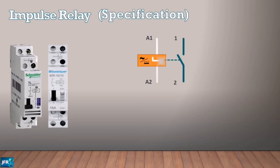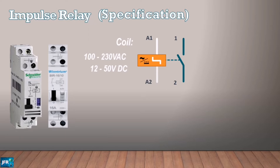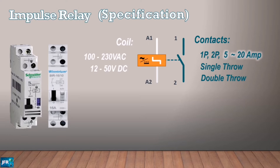For specifications, relay coils can be from 100 to 230 volts alternating current, or 12 to 50 volts direct current power source. Relay contacts can be a single pole or two poles, rated from 5 to 20 amperes. Depending on your application, there are a variety of specifications available in the market.